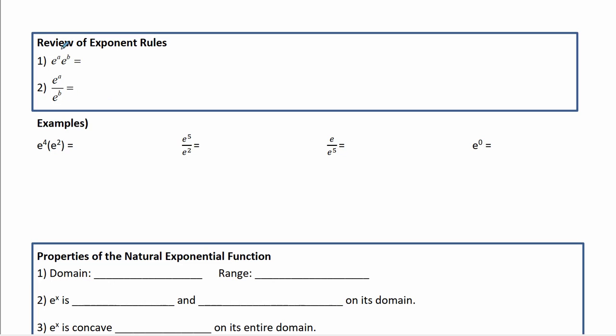Down here are some properties. e to the a times e to the b is just e to the a plus b, same basis, so I can combine powers. This is e to the a minus b when I divide powers, or divide bases that are the same, I subtract powers.